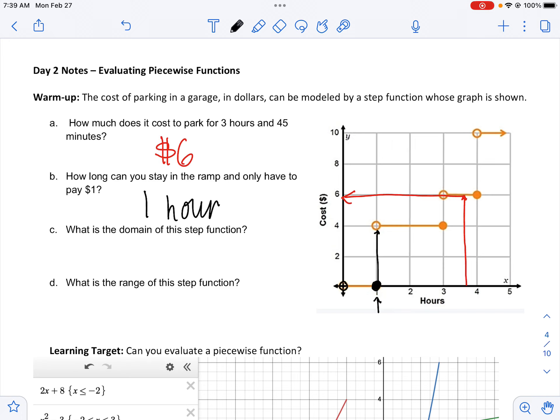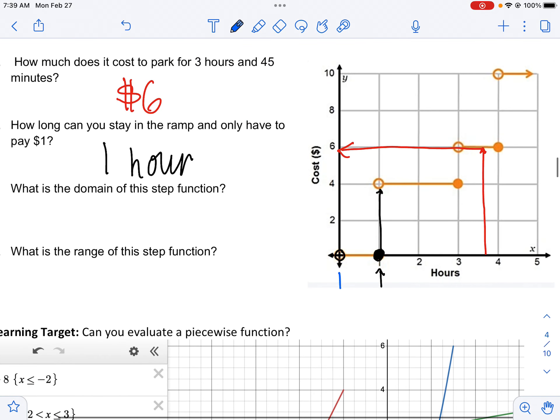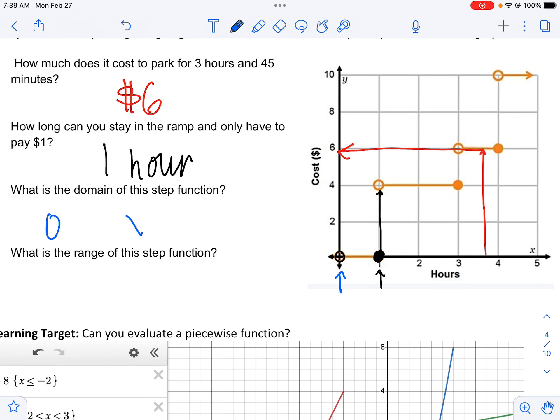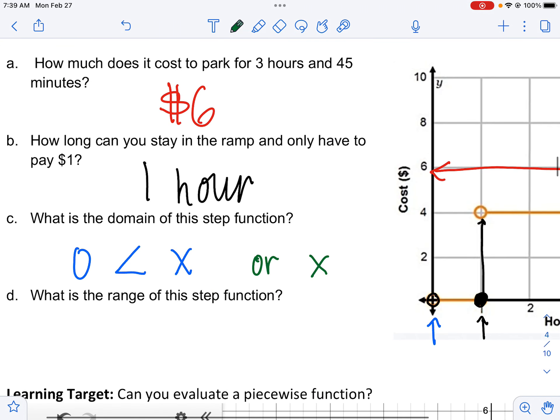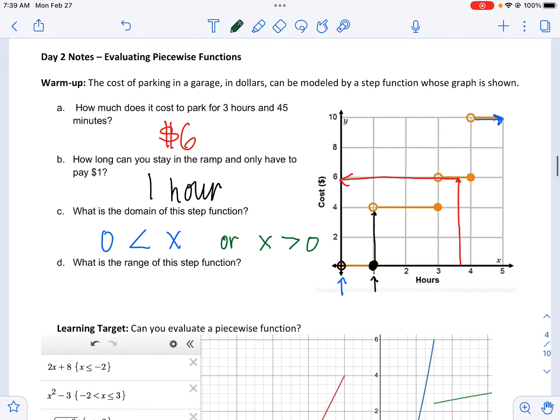What is the domain of this step function? Domain is all possible x values. So it starts at 0 but doesn't include 0. And if you notice, it keeps going. So we can say that x is greater than 0. Usually when it's just one letter, we put that first and x is greater than 0. So there's the domain.